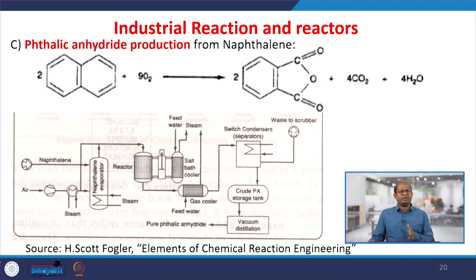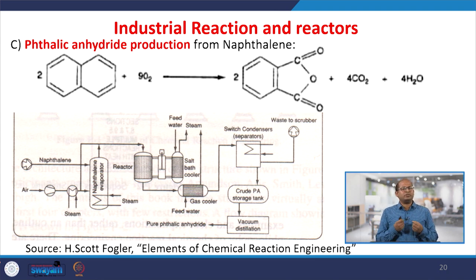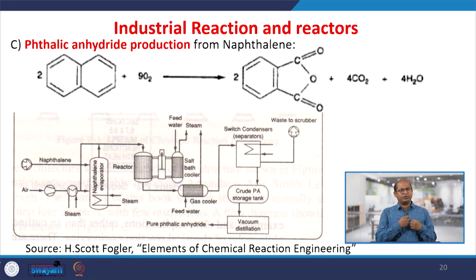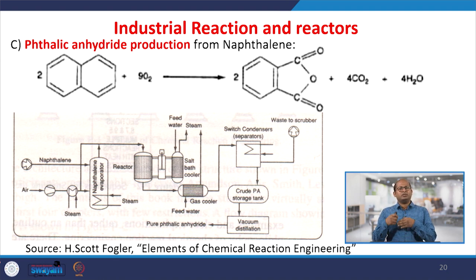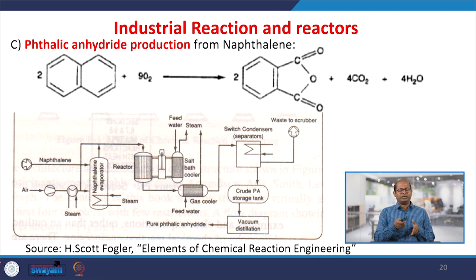Similarly, for naphthalene to phthalic anhydride production: the stoichiometry shows naphthalene and oxygen on the left-hand side as starting materials and phthalic anhydride as the final product on the right. In the process, naphthalene feed and pure oxygen feed enter the reactor, reactions take place, and then products are separated. CO₂ and water as byproducts are separated out, and the final phthalic anhydride is stored as a pure product.